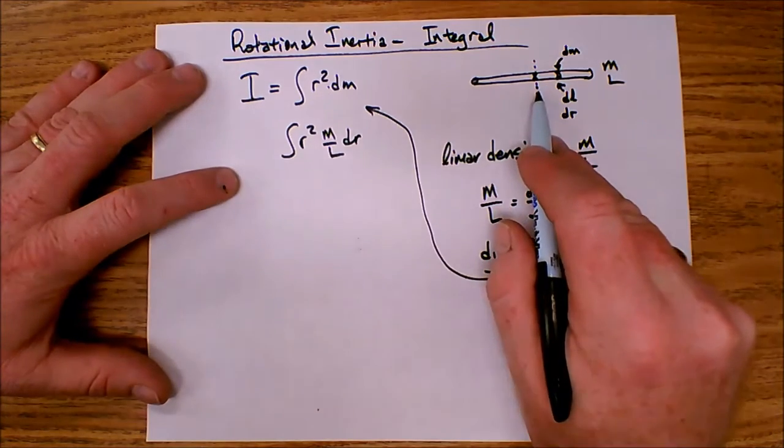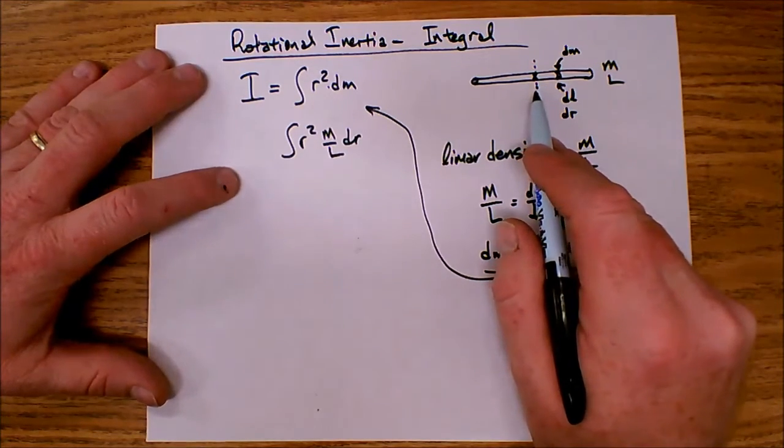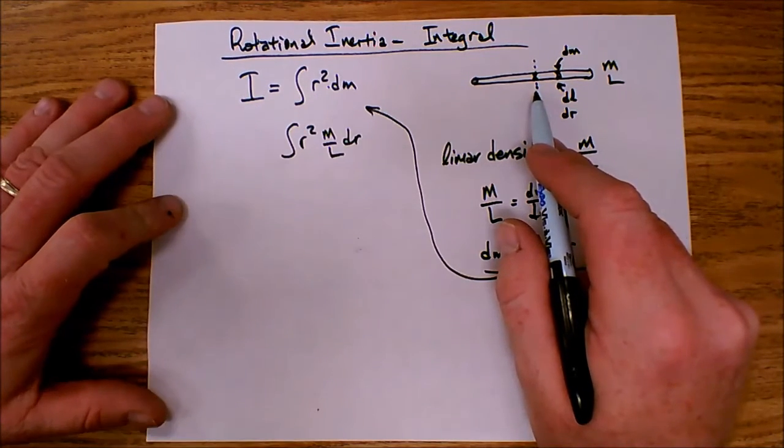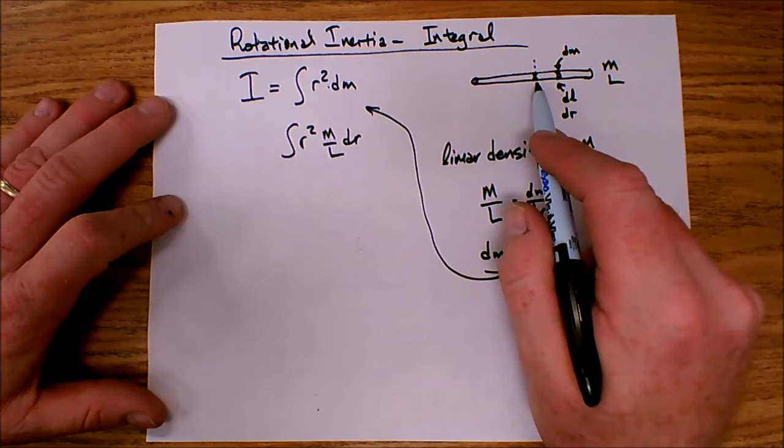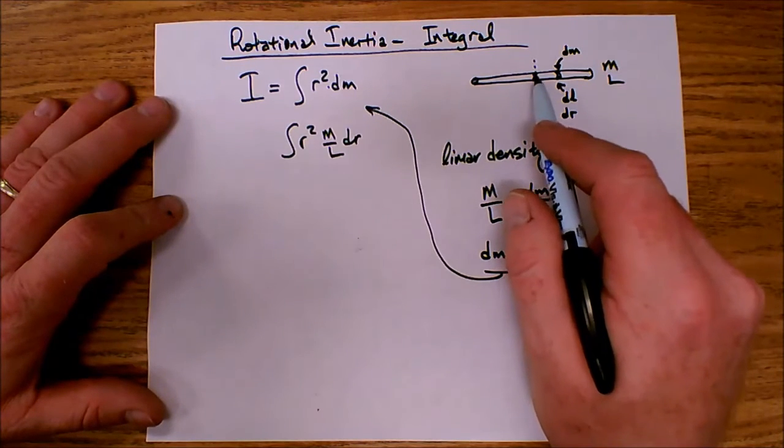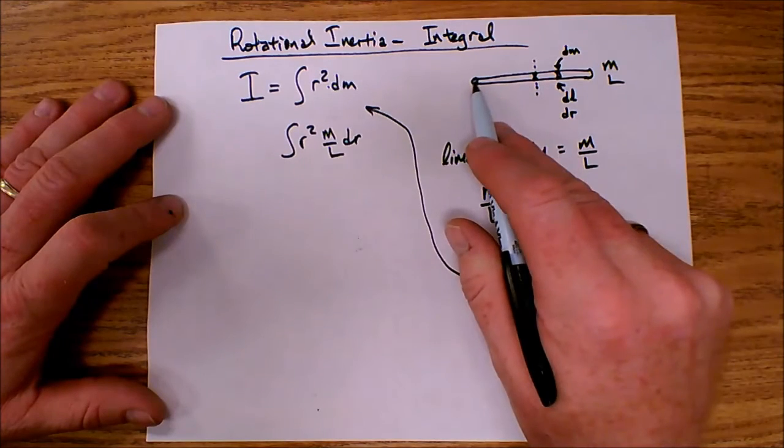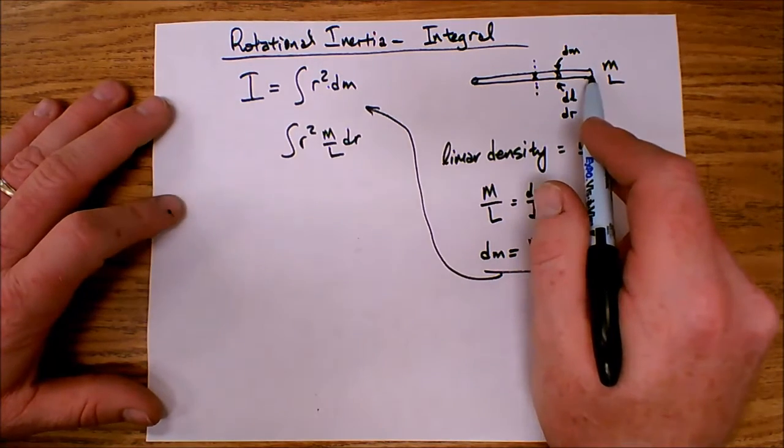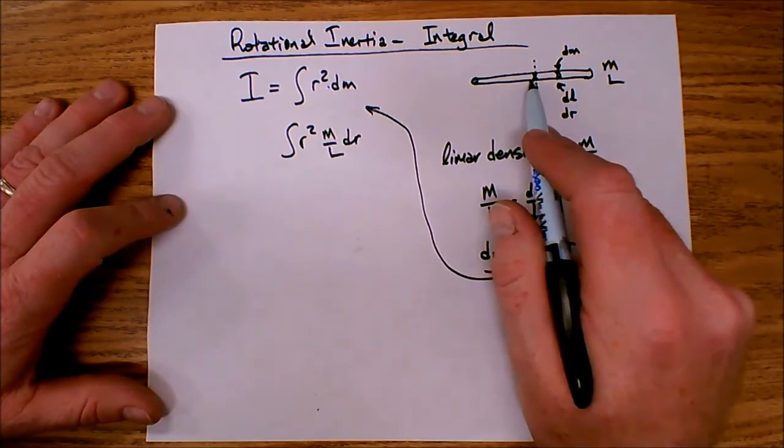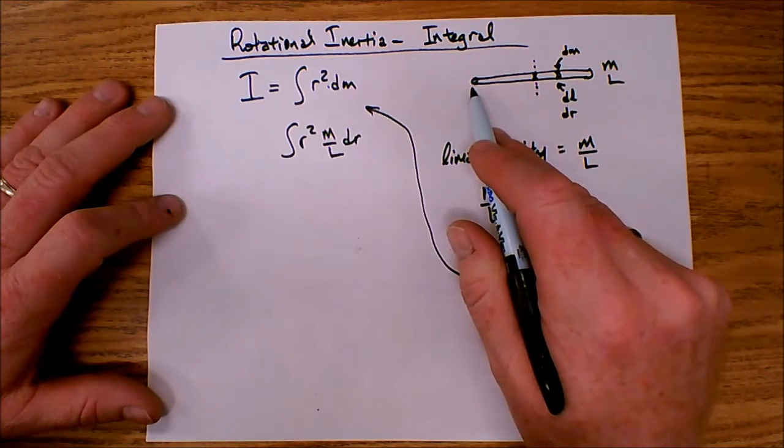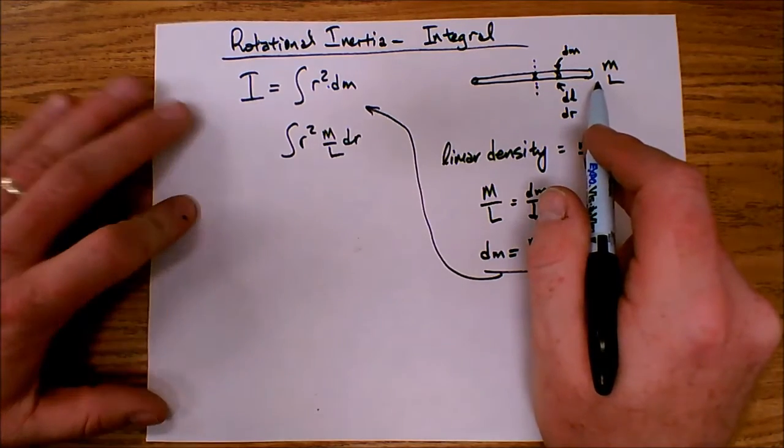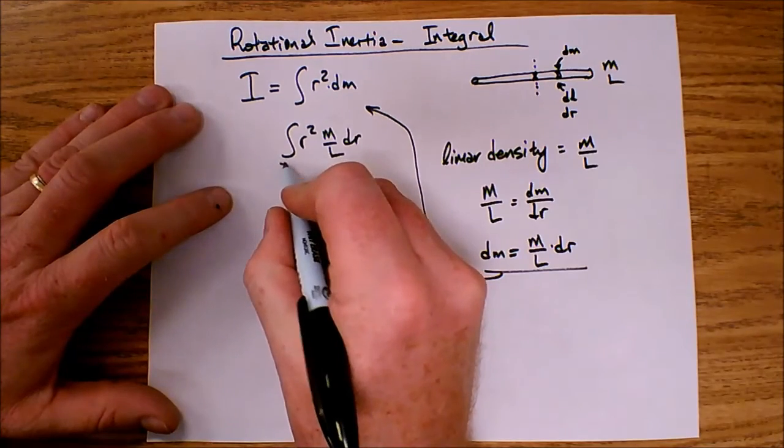Now if I look at where my axis of rotation is, that is my zero. Because r in the integral is measured how far from the axis of rotation. So my point on the far left is going to be half the length away. And the point on the far right is going to be half the length away. If I picture a number line, if this is zero, then over here my coordinate would be negative l over 2. And up here I'd have positive l over 2.